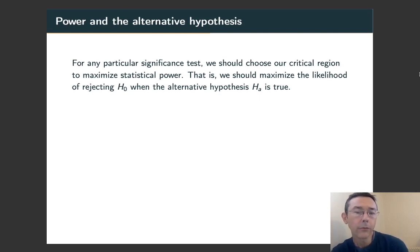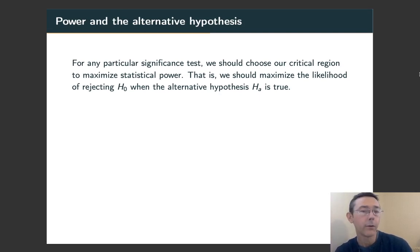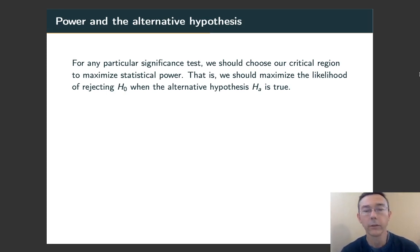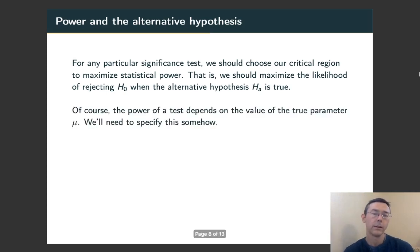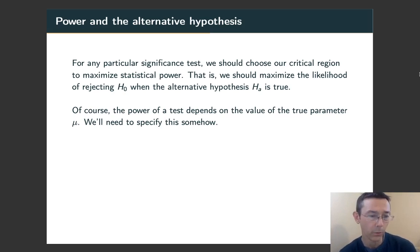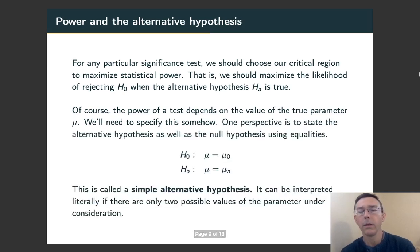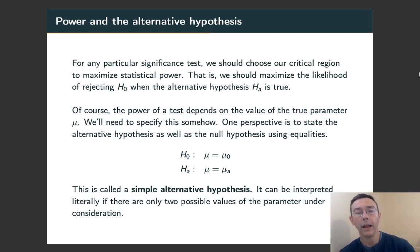There are many different sets in R^n that are going to have that size alpha. How do we pick one that's going to be a good critical region for our test? The answer is that we want to maximize the statistical power — that is, maximize the likelihood of rejecting H0 when the alternative hypothesis is true. That's a little bit problematic because the power of a test always depends on the true parameter mu, so we're going to have to specify that mu somehow. One very common and important way of doing this is by writing our hypotheses as simple alternative and null hypotheses.